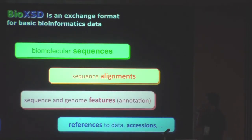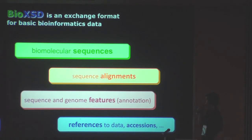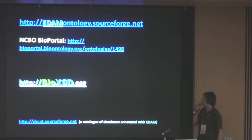BioXSD is an XSD-based format for sequences, alignments of sequences, sequence and genome features — which includes any kind of ontology annotation by any ontology. The idea is to have a common XSD while being able to use any ontologies you would want, or more broadly any enumerated information from the semantic web. It also contains some accessory types for references, such as accessions and other small types of data. These are the links to remember: the first two are for EDAM ontology and bioinformatics.org, and the bioDBcore at SourceForge is a catalogue of bioinformatics databases which are annotated with EDAM.